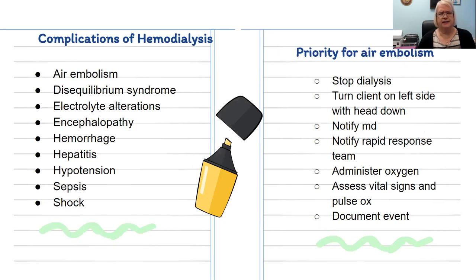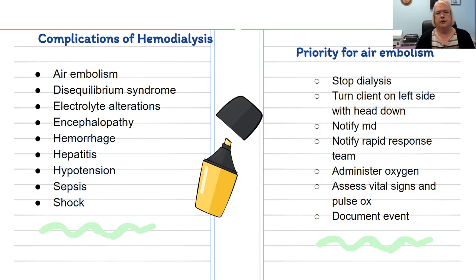Complications of hemodialysis include air embolism, disequilibrium syndrome, electrolyte alterations, encephalopathy, hemorrhage, hepatitis, hypotension, sepsis, and shock. For air embolism, the priority is to stop the dialysis and turn the client on their left side with their head down. Air bubbles rise, so placing the head down and the patient on their left side traps the air bubble in the bottom part of the ventricle — just like a bubble going up in a pool. Then notify the MD, notify rapid response, administer oxygen, assess vitals and pulse ox, and document the event.